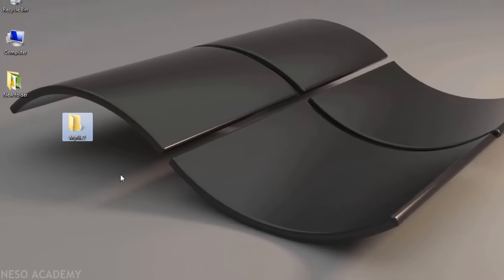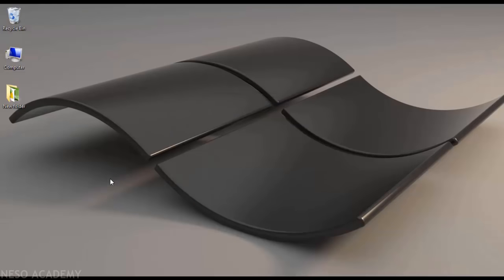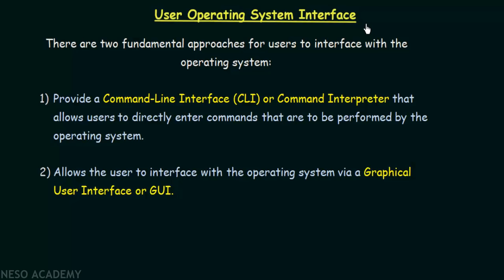That shows how user-friendly and easy the graphical user interface is, and we have also seen how to do the same thing using the command line interface. In those examples we saw how to use the CLI to perform tasks in both Windows and Linux, and also a small demo of the graphical user interface. I hope these examples help you understand how the user interacts with the operating system through these User Operating System Interfaces. Thank you for watching and see you in the next one.